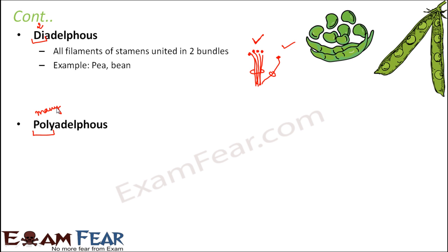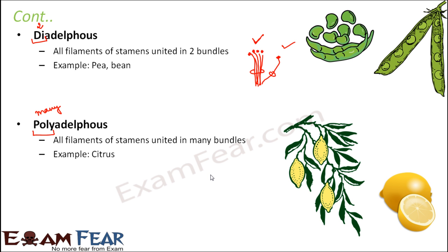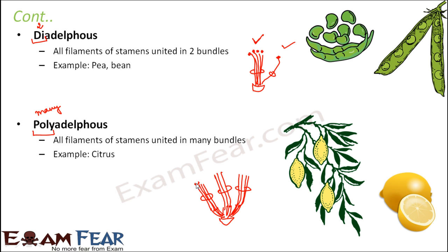The next type is polyadelphous — 'poly' means many. The filaments will be united in many bundles, so all filaments of stamens are united in many different bundles. An example is citrus. In a citrus plant flower you can observe this polyadelphous arrangement of stamens. Several stamens form one bundle, some more form another bundle, and others form yet another bundle. The anthers are still free, but the filaments are united in multiple different bundles — that is known as polyadelphous.